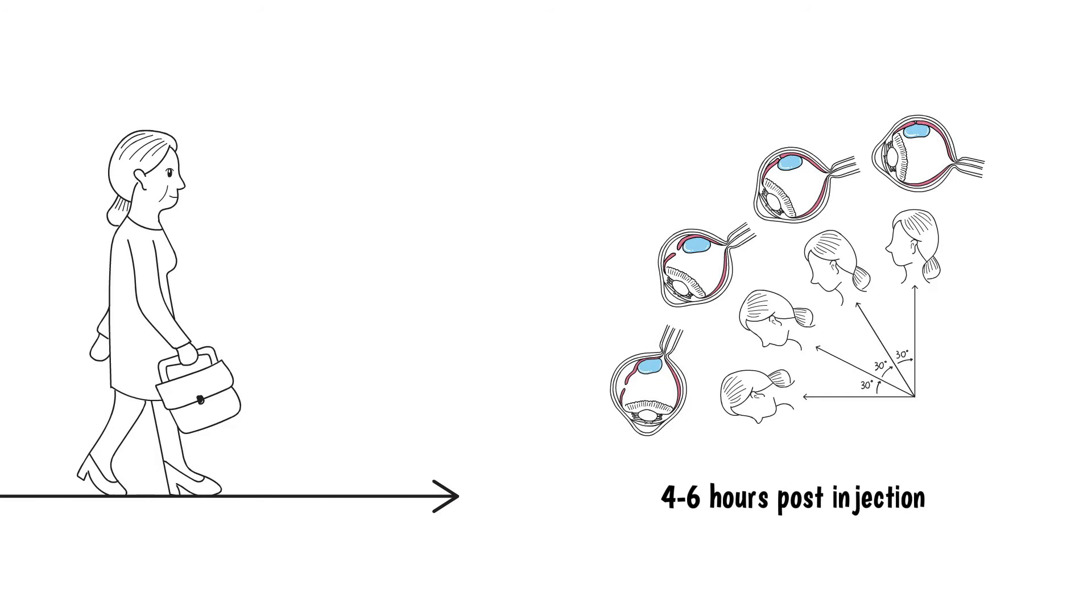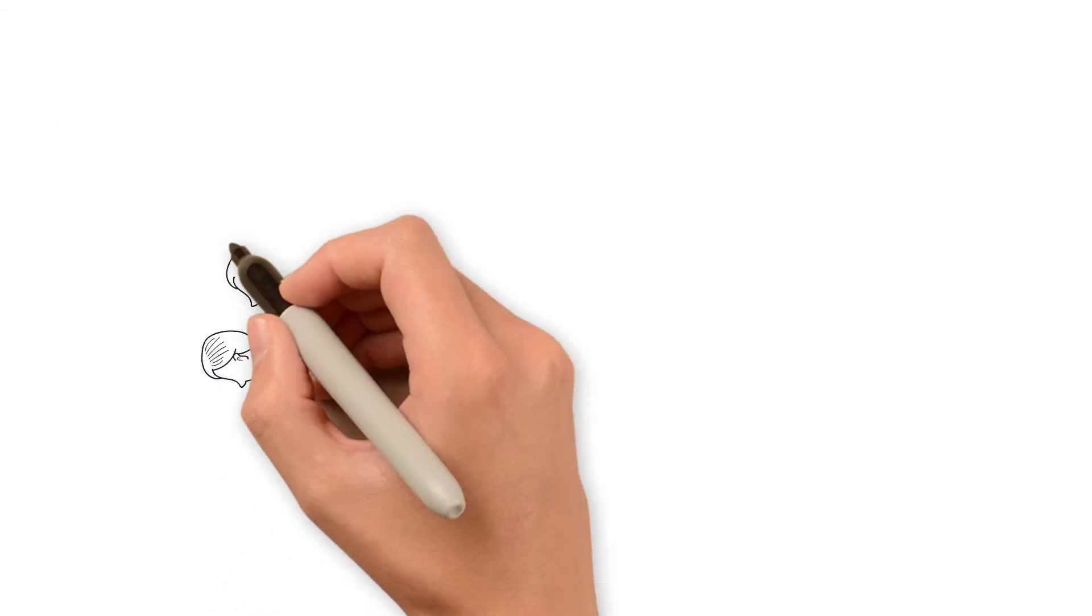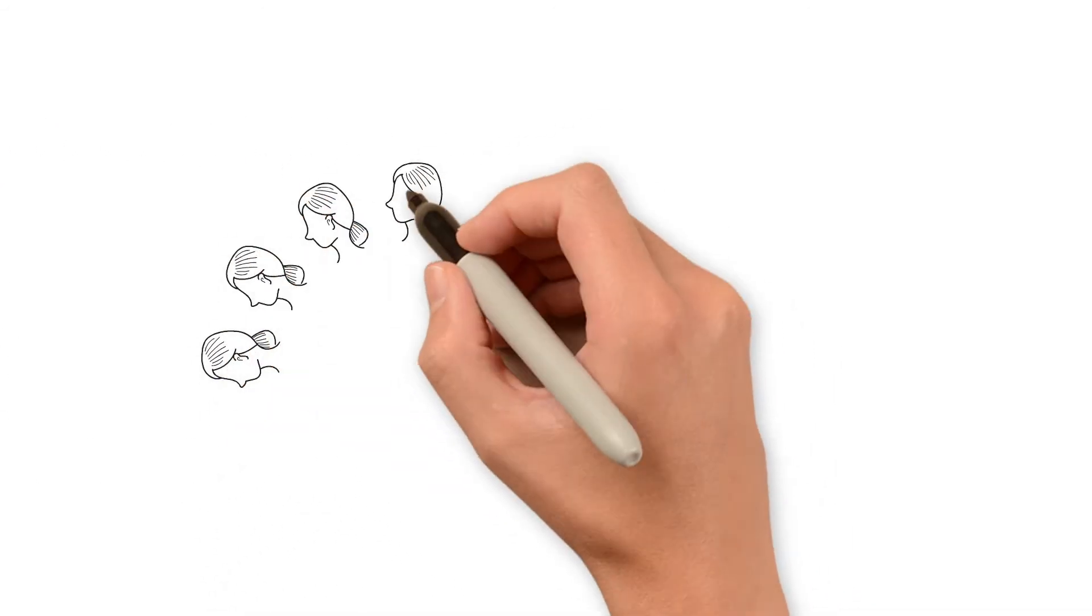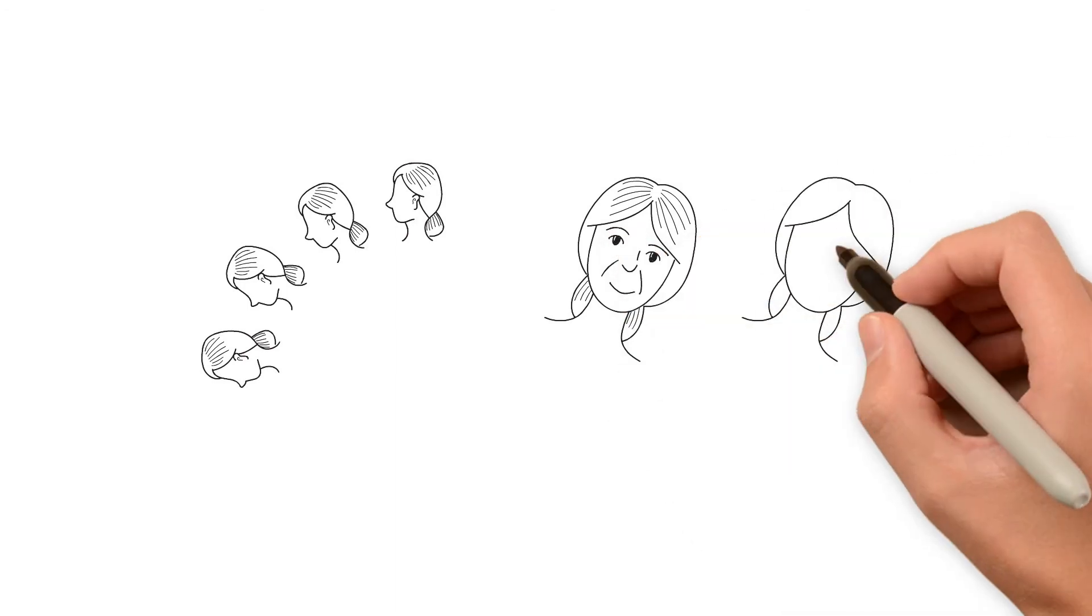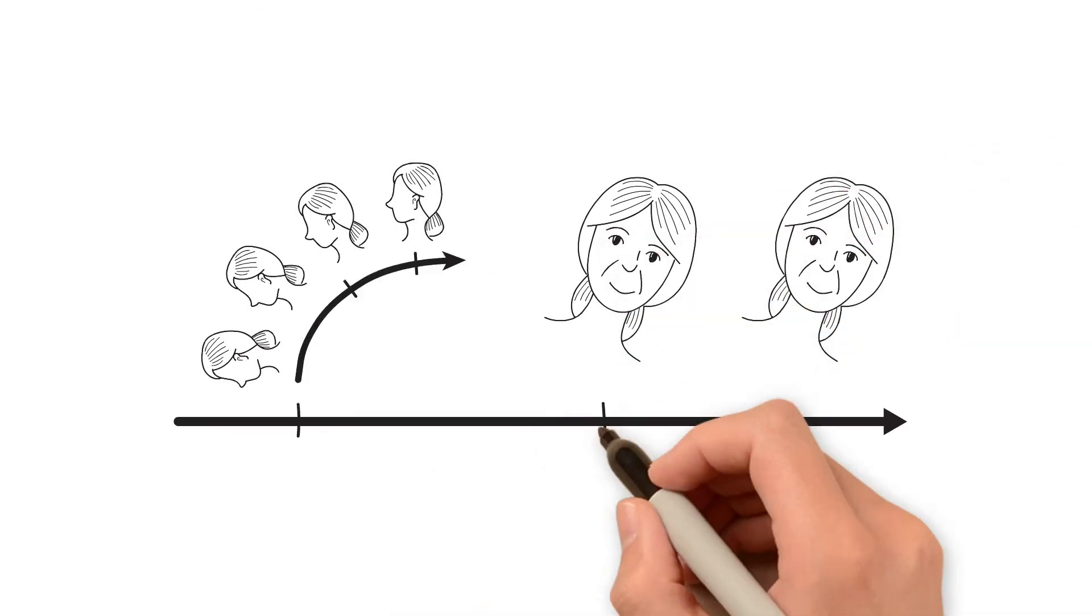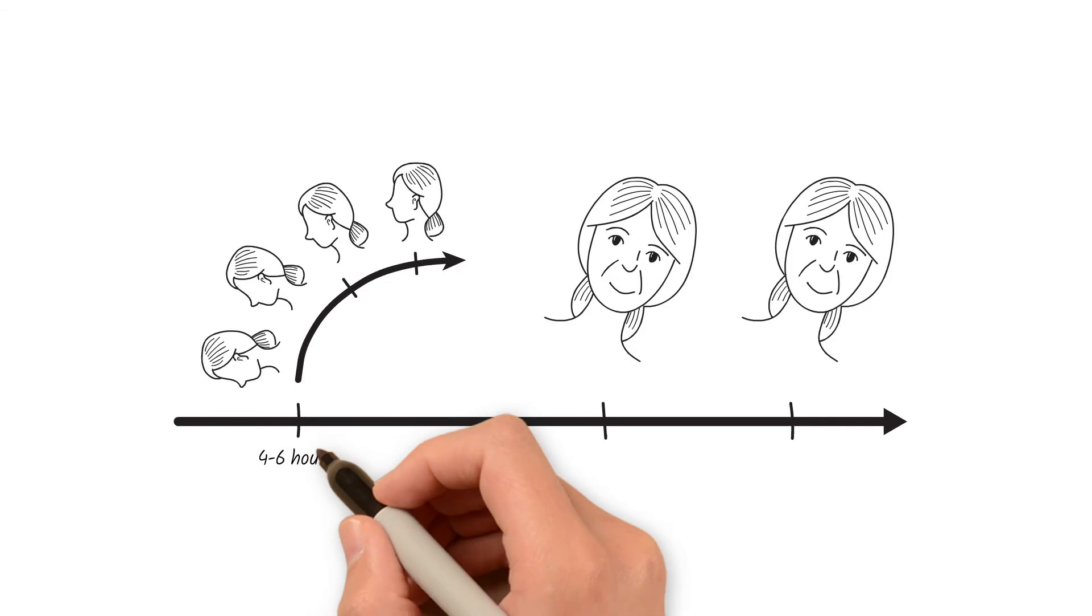Strict adherence of each head posture is important, as these postures help remove some of the fluid from behind the retina. Afterwards, you will be asked to maintain a certain head posture for 7-10 days. Your doctor will let you know the head posture, as it will depend on the specific location of your retinal tear.